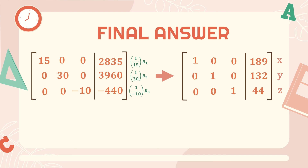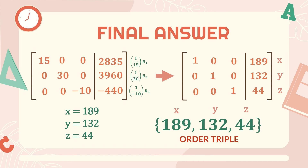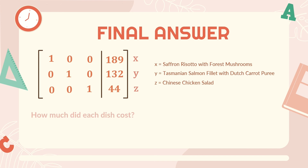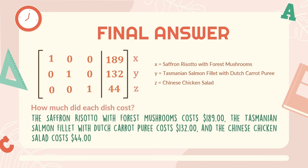So our final answers are X = 189, Y = 132, and Z = 44. One way to write the answer is in ordered triple form: (189, 132, 44). But since we are solving a word problem, we must answer in a complete sentence: the saffron risotto with forest mushrooms costs $189, the Tasmanian salmon fillet with Dutch carrot puree costs $132, and the Chinese chicken salad costs $44.